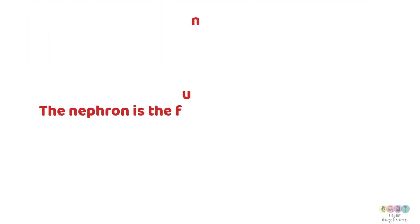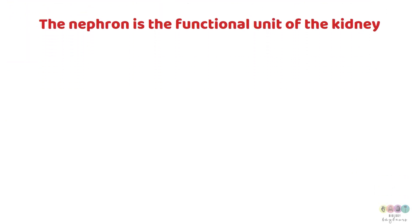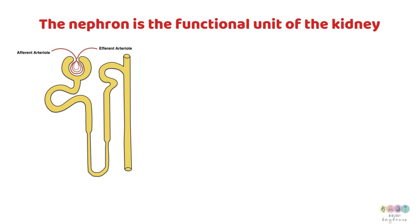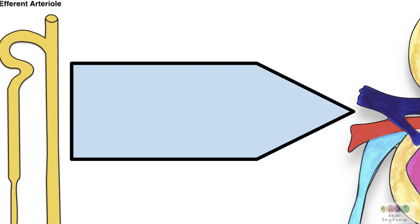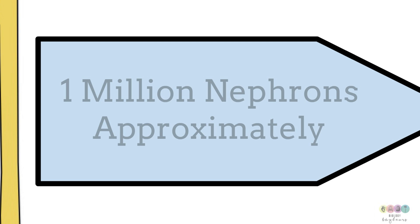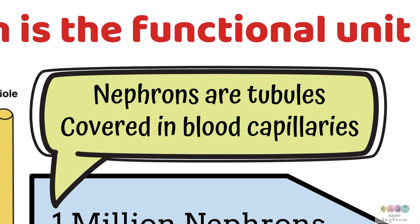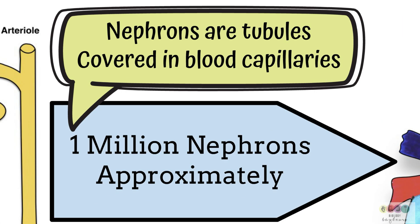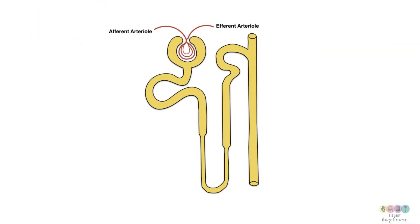The nephron is the functional unit of the kidney — that's a very important statement. A nephron is a tubule found within the kidney. There are approximately one million nephrons inside each kidney. These nephrons are tiny tubules covered in blood capillaries, and nephron structure is essential to understanding urine formation.